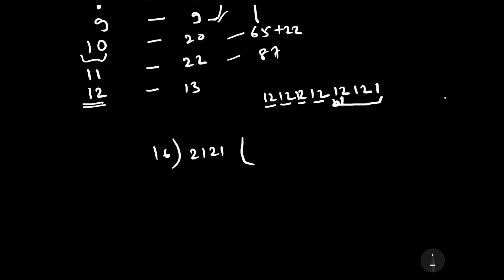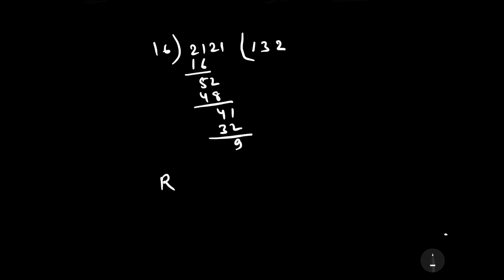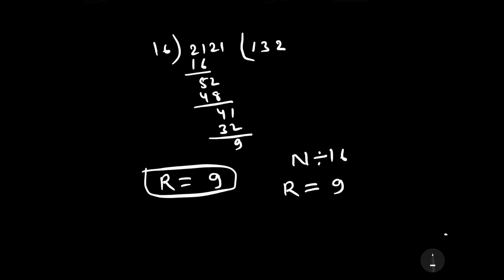Let us divide it. 2121 divided by 16: 16 × 1 = 16, subtract to get 52; 16 × 3 = 48, subtract to get 4; bring down: 16 × 2 = 32, remainder 9. It means the remainder is equal to 9 — that is, when that number is divided by 16, the remainder will be 9. This is our required solution.